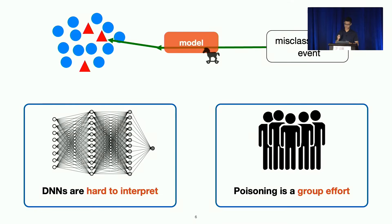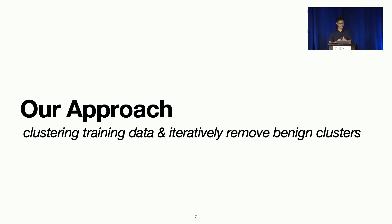So motivated by these two challenges, we design our approach in the following way. At a very high level, we first seek to cluster the training data into groups so we can reason about them at a group level. So we seek to iteratively identify the benign clusters, where the cluster of data that are not responsible for this attack. We're going to remove these clusters until we're left with a set of poison data that are responsible.